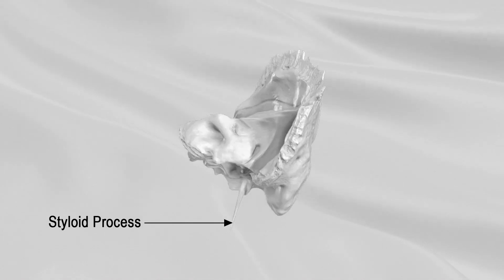Styloid process: The styloid process is slender, pointed, and it projects downward and forward from the undersurface of the temporal bone. It is a sharp spine, about 2.5 centimeters in length. Its proximal part is unsheathed by the vaginal process of the tympanic portion. Its distal part gives attachment to ligaments and muscles.